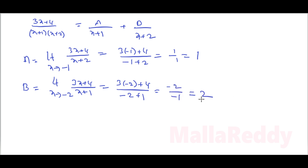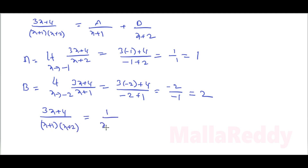B value is 2. Therefore, partial fractions of (3x+4) by (x+1)(x+2) equals 1 by (x+1) plus 2 by (x+2). That is the answer.